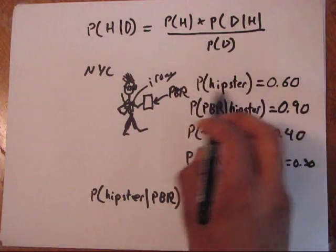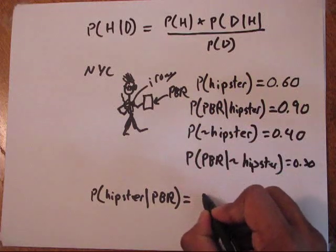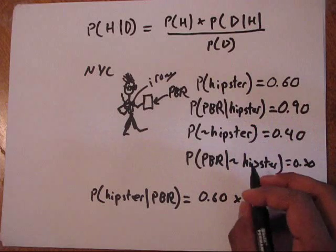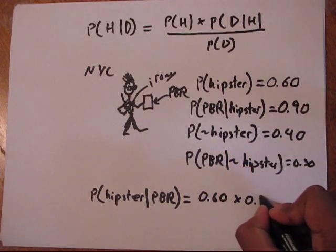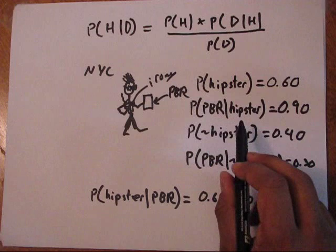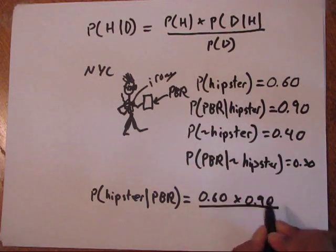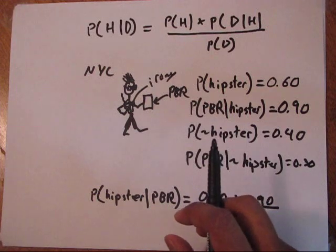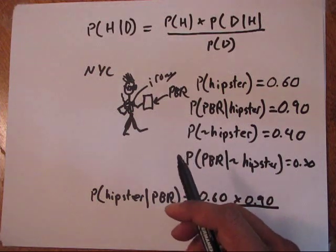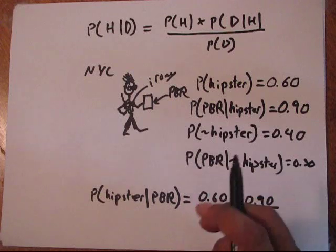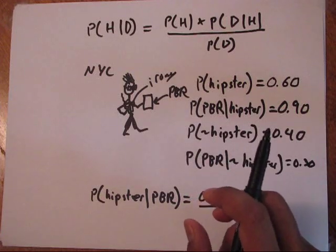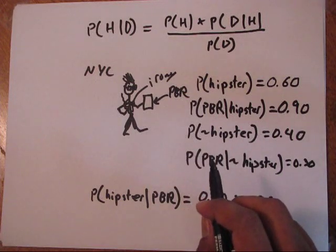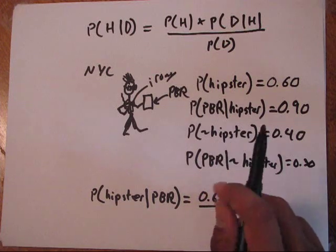Here's how we're going to do it. First we have the probability of the hipster—this is our prior—we got 0.6, our prior, times our likelihood, which is the 90%, the likelihood that someone is drinking PBR given that they're a hipster. But then we need our probability of the data. We're basically asking, what is the probability that anyone in Williamsburg is drinking PBR? To get that, we want to see what is the frequency of that kind of person—whether they're a hipster or not—and figure out how many of those people drink PBR.